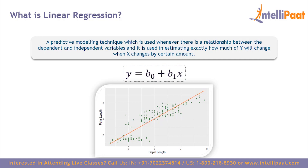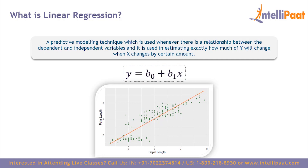Linear regression estimates how much y will change when x changes by a certain amount. For example, flowers' sepal length is mapped on the x-axis and petal length on the y-axis to understand how petal length changes with respect to sepal length. The equation used is y = b0 + b1x, where y is the dependent variable, b0 is the y-intercept, b1 is the slope, and x is the independent variable — just like the mathematical equation y = mx + c.